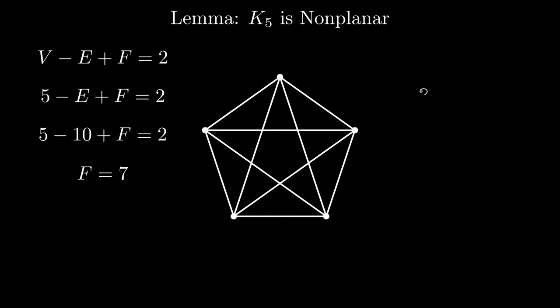Now, we do not have the same restriction on edges per face as K3,3, but any planar graph has at least three edges per face. So we can use the bound 3F less than or equal to 2E. As before, our two different solutions for F show us that K5 cannot satisfy Euler's formula.